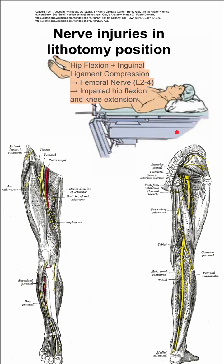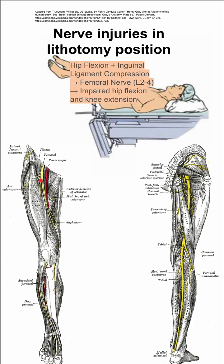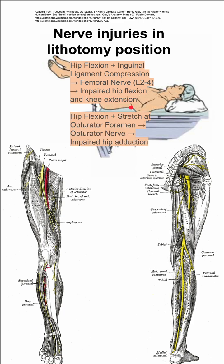The first listed is when you have hip flexion and inguinal ligament compression, which can compress the femoral nerve. The femoral nerve is in the front of your leg, so if you are flexing very tightly, that inguinal ligament — which is in your groin area — can compress the femoral nerve, leading to impaired hip flexion and knee extension.